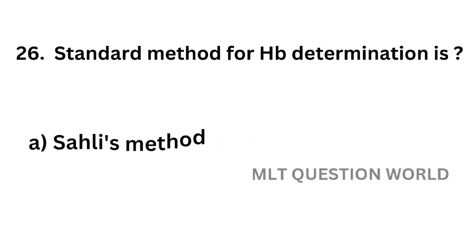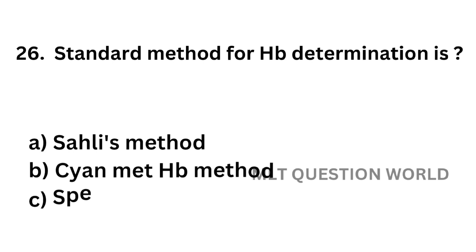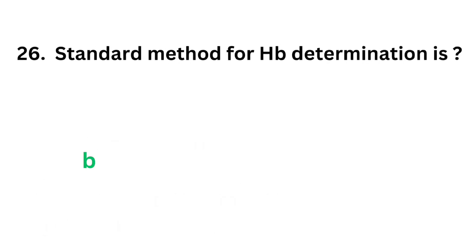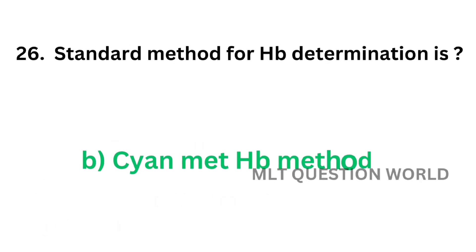Question number 26 (standard HB method). Standard method for hemoglobin determination is: Option A, Sahli's method; Option B, cyanmethemoglobin method; Option C, specific gravity method; Option D, oxyhemoglobin method. The correct answer is Option B, cyanmethemoglobin method. Cyanmethemoglobin method is the standard method for hemoglobin estimation.